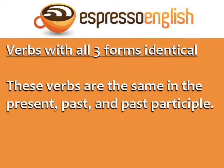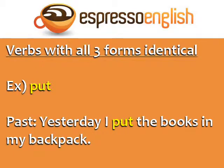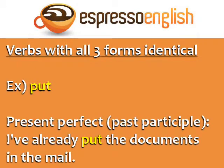The first group is irregular verbs with all three forms identical. These verbs are the same in the present, past, and past participle. One example is 'put.' Present: I always put the milk in the refrigerator. Past: Yesterday I put the books in my backpack. The present perfect uses the past participle form: I've already put the documents in the mail.